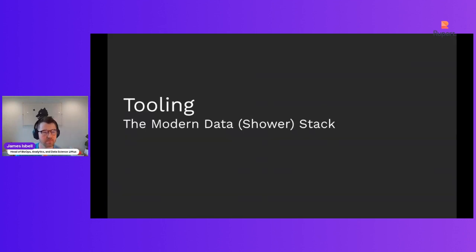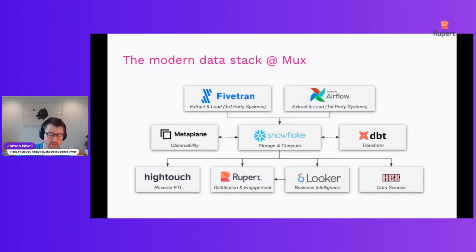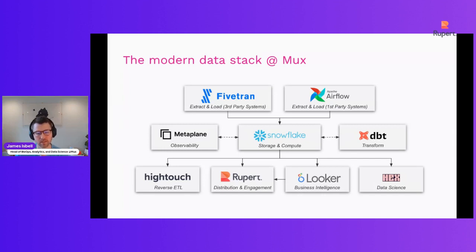The last piece of the puzzle was tooling. Let's talk about the modern data shower stack. This is our ecosystem at Mux that we've built over the last few years: we have Fivetran and Airflow piping data into Snowflake, DBT managing transformations, Metaplane for observability, and then downstream a few other tools for business intelligence — Looker, Rupert for distribution and engagement, High Touch as our reverse ETL tool, and Hex for data science. But this view is just for us — the BizOps and analytics people. It's not for customers. They don't care about DBT or Metaplane or that we run High Touch and do all this stuff well in the data warehouse.